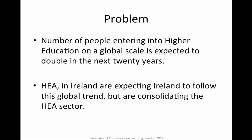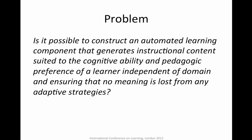E-learning is still a little bit unstructured, unconnected, and probably not being addressed in an appropriate manner. We have all the information in the world but we just need to harness it. This project started with the question: is it possible to construct an automated learning component that generates instructional content suited to the cognitive ability and pedagogic preference of a learner, independent of domain, and ensuring no meaning is lost from any adaptive strategies?